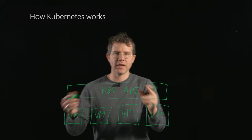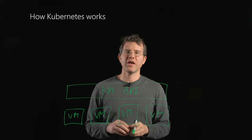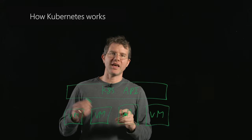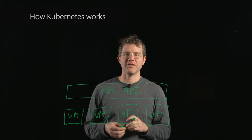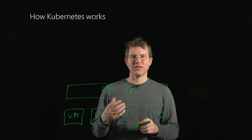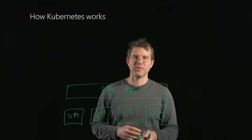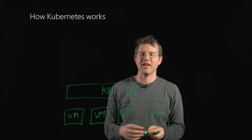This is the Kubernetes API surface area. We abbreviate Kubernetes as K8s sometimes — it's shorter and easier to write. The eight stands for the eight letters in between the K at the beginning and the S at the end.